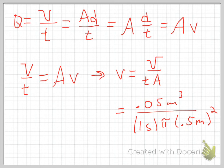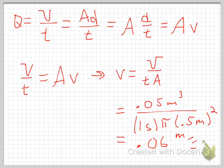Plugging this into my calculator, my fluid velocity is about 0.06 meters per second. So I solved for velocity by rewriting my volume as the area of the front face times the distance it moves in one second — that lets me pull out the velocity.